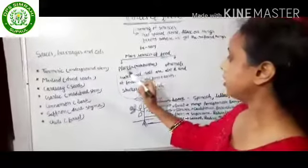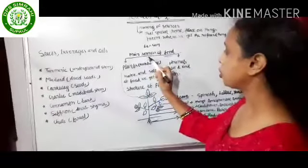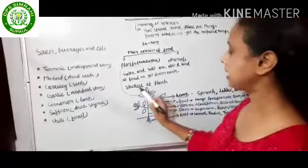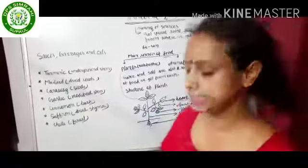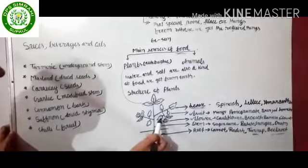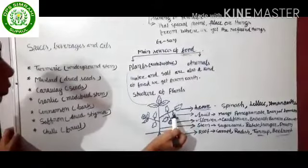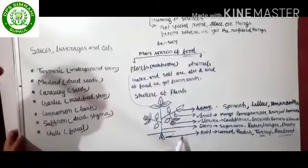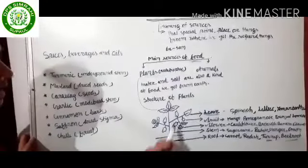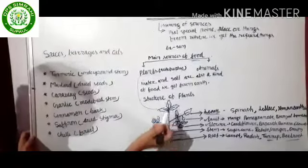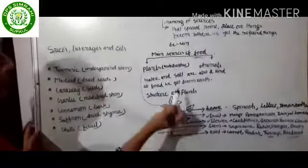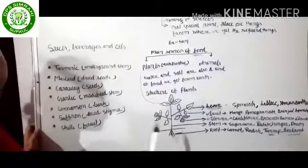For a better understanding of plants as sources of food, we need to know the parts of plants — the structure of plants. We can see here: roots, stem, leaves, fruit, and flower. These are the parts of plants, and each and every part of a plant is eaten by us.